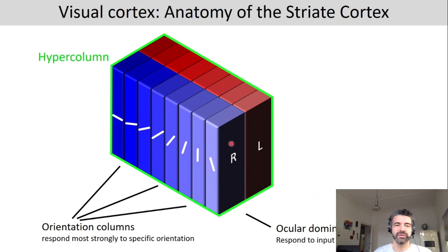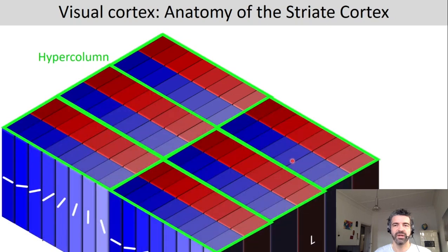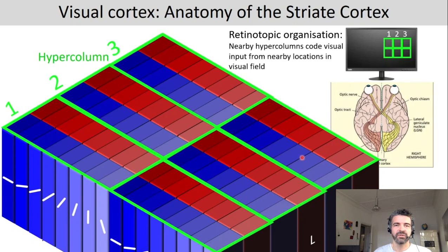Cells in a particular column would respond very strongly to stimuli presented on the right eye with a specific orientation. And of course there's not just one hyper column — there are very many hyper columns. They are retinotopically organized, meaning nearby hyper columns code visual input from nearby locations in the visual field. Each hyper column gets input from a specific area in the visual field, and two neighboring hyper columns would always get input from nearby areas.